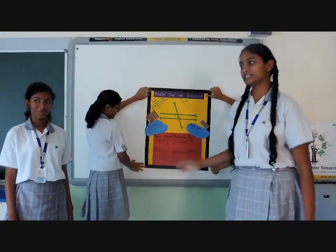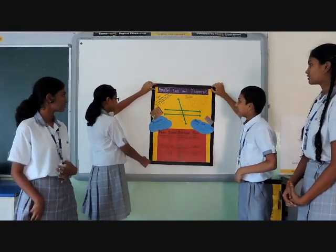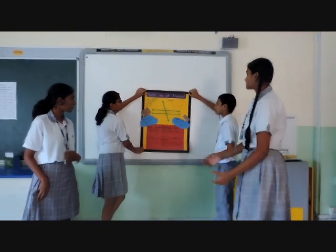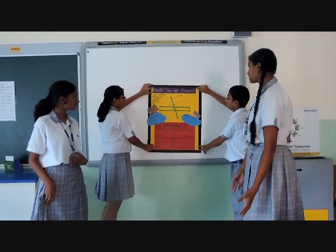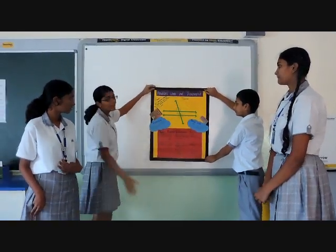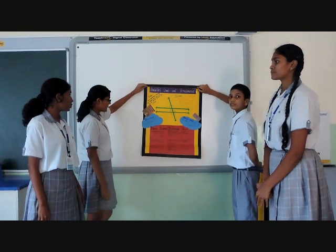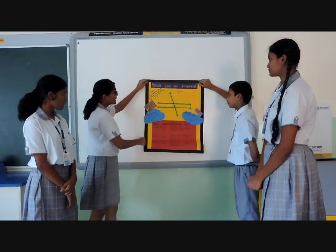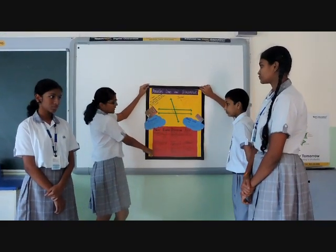I am going to present the chart work on parallel lines and transversal. The second theorem states that if a transversal intersects two parallel lines, then each pair of interior angles on the same side of the transversal are supplementary. Two lines in the same plane that do not intersect are called parallel lines. Any line that intersects two other lines in the same plane is called a transversal. A transversal consists of three main subheadings: corresponding angles, alternate interior angles, and alternate exterior angles.